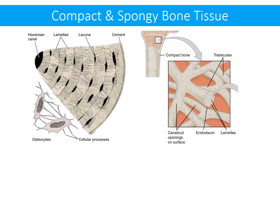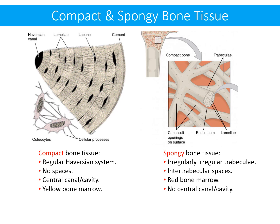Comparing compact and spongy bone: compact bone has a regular Haversian system with no spaces among trabeculae, hence no red bone marrow. It has an elongated central canal containing yellow bone marrow — the inactive type. Spongy bone, in contrast, has irregular trabeculae with inter-trabecular spaces containing red bone marrow — the active type — but there is no central canal or cavity.